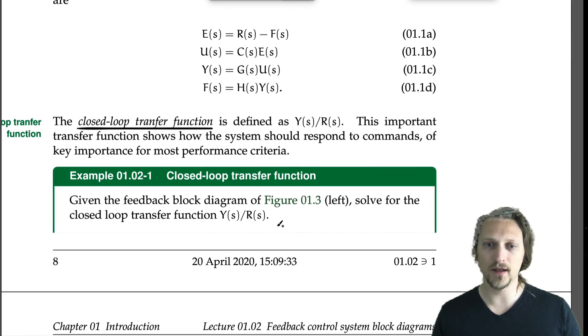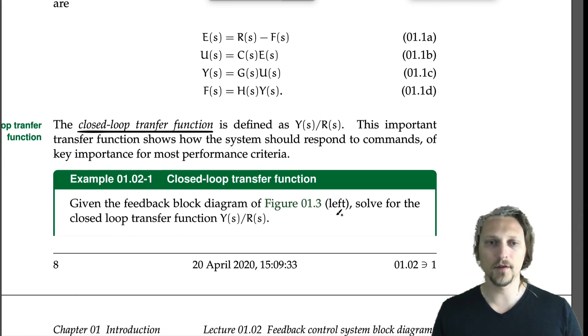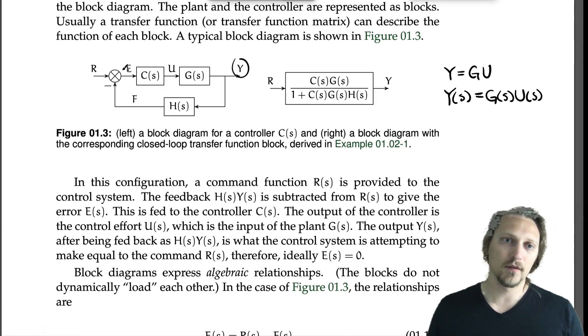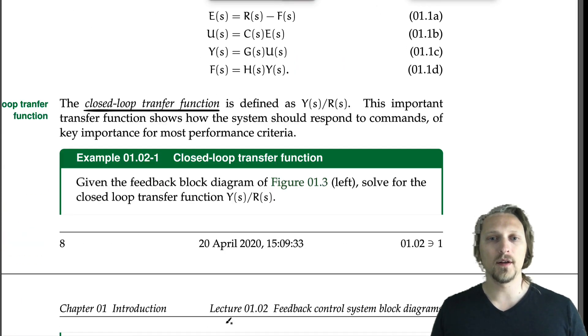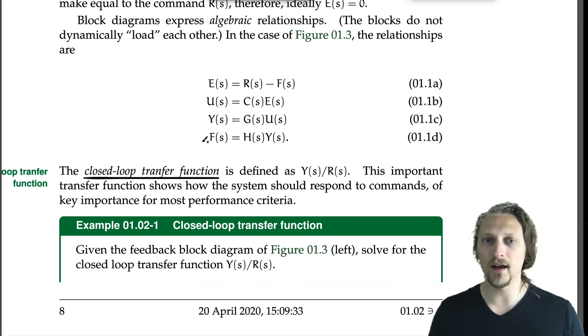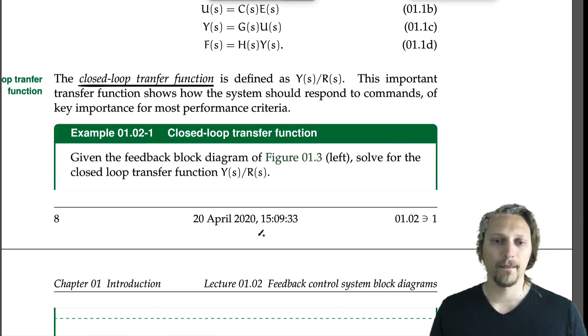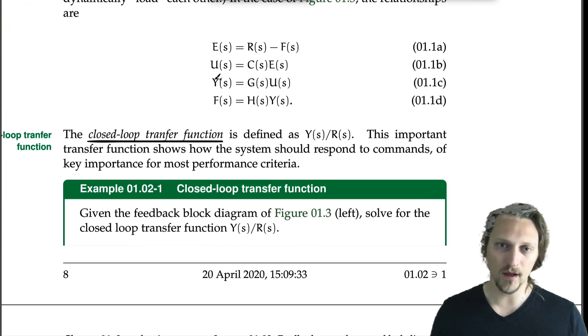We're going to derive a closed-loop transfer function here. Given the feedback block diagram of Figure 1.3, solve for the closed-loop transfer function Y over R. We want to know the relationship between the output and the command. We can simply use these algebraic relationships to derive that relationship. We want to eliminate any intermediate variables, so we don't want to have E, U, or F show up. We just want a relationship between Y and R.